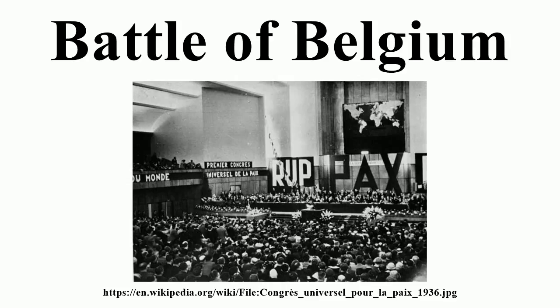On 10 May 1940, Germany invaded Luxembourg, the Netherlands, and Belgium under the operational plan Fall Gelb. The Allied armies attempted to hold the German army in Belgium, believing it to be the main German thrust. After the French had fully committed the best of the Allied armies to Belgium between 10 and 12 May, the Germans enacted the second phase of their operation — a breakthrough, or sickle cut, through the Ardennes — and advanced toward the English Channel. The German army reached the Channel after five days, encircling the Allied armies.